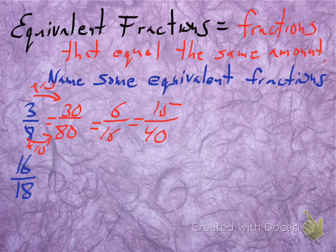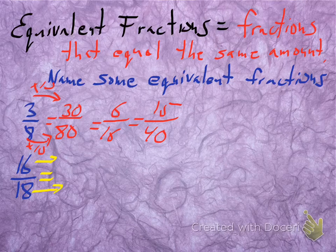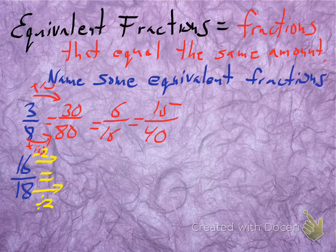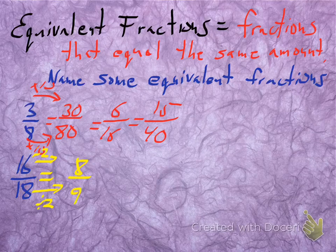Let's change colors to yellow. If I take 16/18, this one's a little different. We can get an equivalent fraction not by multiplying, but by dividing. What could you divide out of 16 and 18? They're both even, so take out a 2. If I divide the top by 2, I get 8, and the bottom by 2, I get 9.